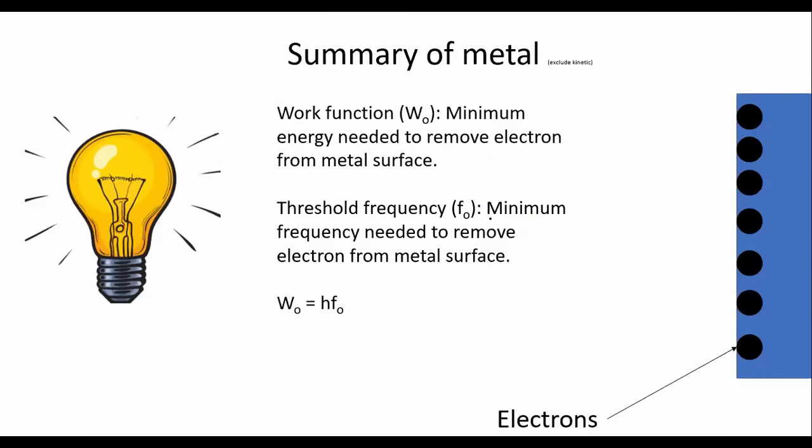And so here's a summary of everything that we have just spoken about. We have something called the work function, which is the minimum energy needed to remove an electron from the metal surface. Then we have something called a threshold frequency, which is the minimum frequency needed to remove an electron from a metal surface. And you can use this formula to switch between the work function and the threshold frequency. In some exam questions, you're going to have to use the threshold frequency, whereas in other questions you might have to use the work function. The one is energy and the other one is frequency.